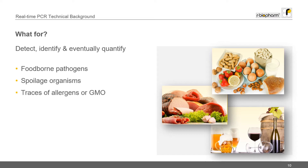But also traces of GMO or allergenic compounds. And last but not least, it is also possible to check whether the beef meat in your burger is pure beef or mixed with horse, for example.